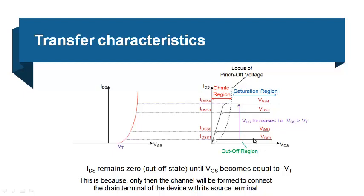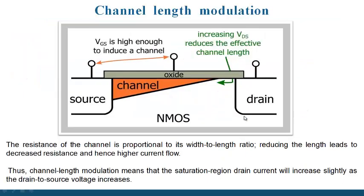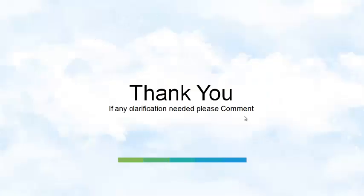The channel length modulation means that the saturation drain current will increase slightly as the drain-to-source voltage increases. This change is very slight and not significant. You are not supposed to say that increasing VDS will increase drain current, because this change is negligible. The only way to increase ID is by increasing the gate-to-source voltage. So MOSFET is a voltage control device: the voltage given to gate-to-source decides the operation, and after crossing the threshold voltage the device turns on — changing the gate voltage changes ID.